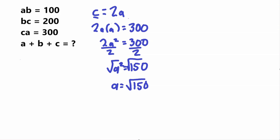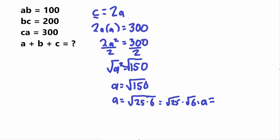We can simplify this square root. Is there any factor of 150 that is a perfect square? Yes — that number is 25, so 150 equals 25 times 6. So the square root of 150 equals the square root of 25 times the square root of 6, and the square root of 25 is 5, so A equals 5 times the square root of 6.